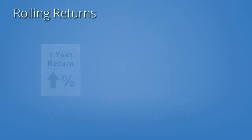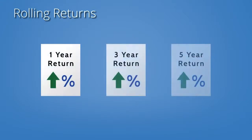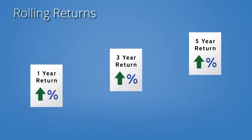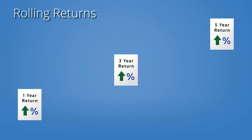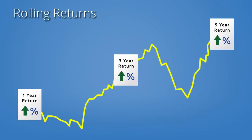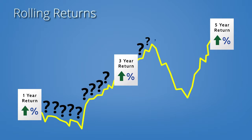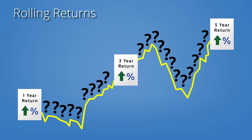Yes, the trailing one, three, or five-year period returns of the investment may have been positive, but there may have been times when over those same time periods, investment performance has been significantly negative. Can you tolerate that degree of investment risk? If not, you may be better off with a more conservative investment.